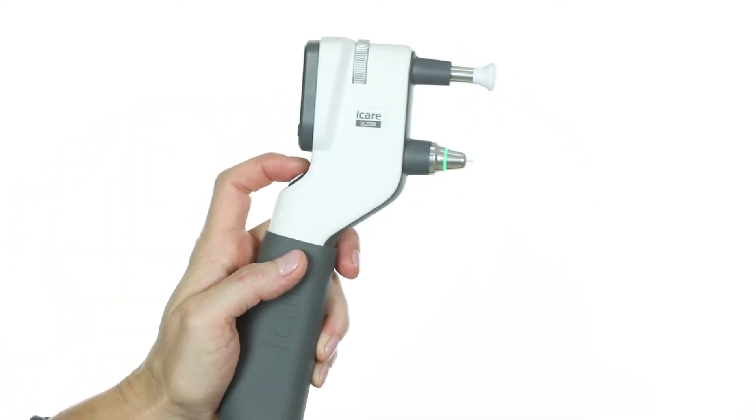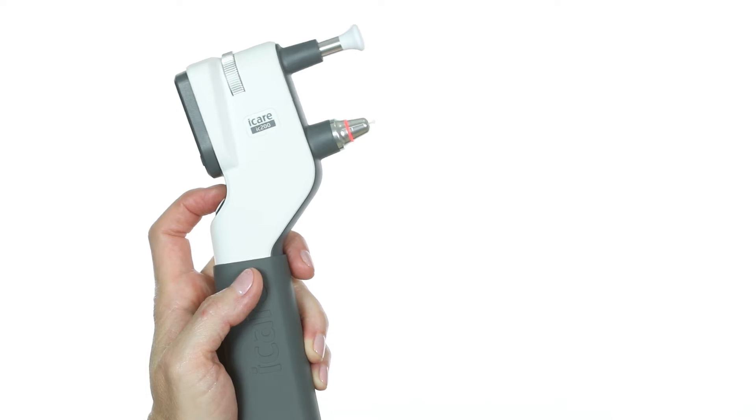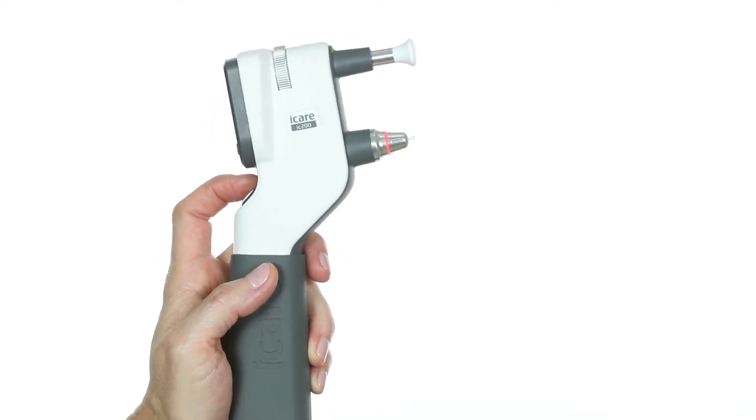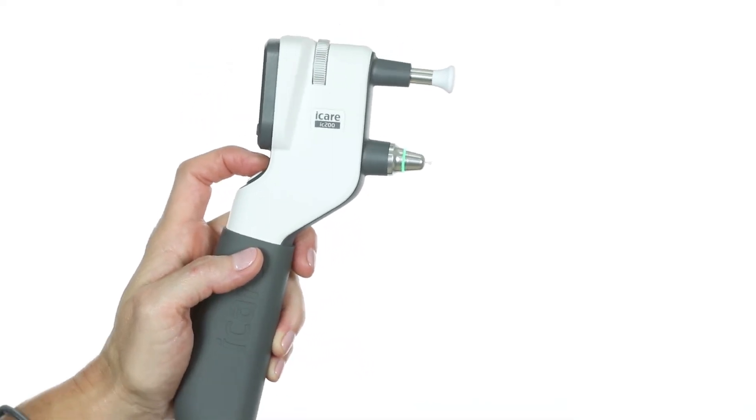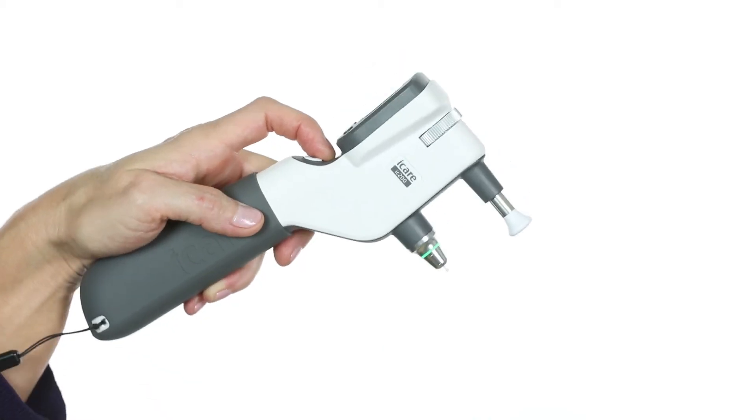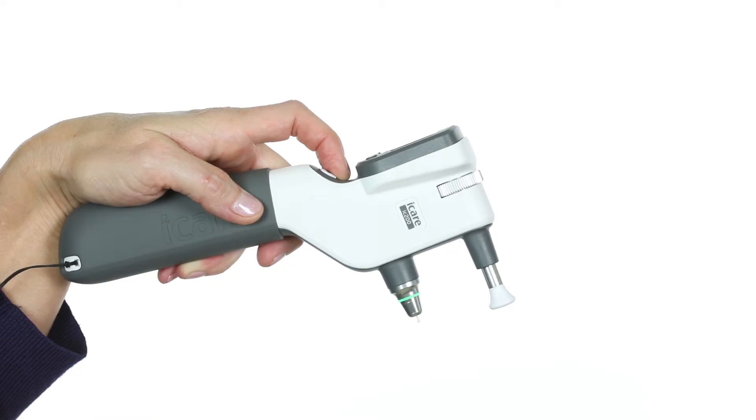If the probe base light is red, the device is tilted too far upward. The green probe base light indicates proper alignment when taking a measurement in sitting, supine, or any position in between.